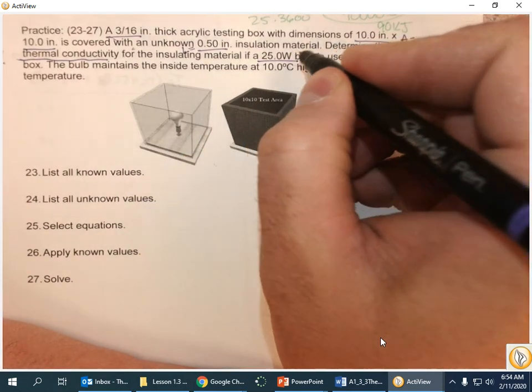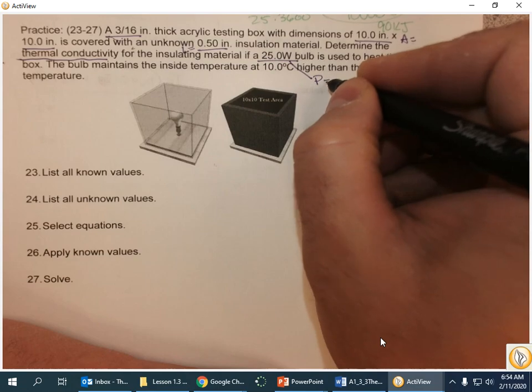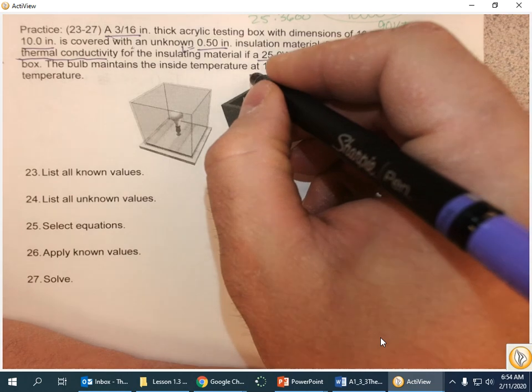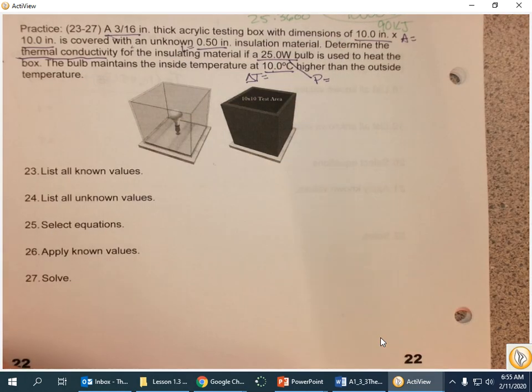For the insulating material, they're telling me 25-watt bulb, so I know that that's power. As used to heat the box, the bulb maintains a temperature 10 degrees higher, so that's a difference in temperature. It is 10 degrees on the outside versus the inside.